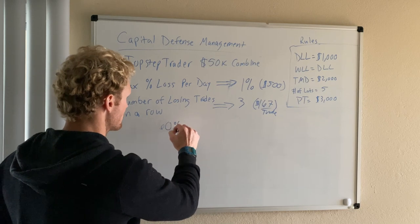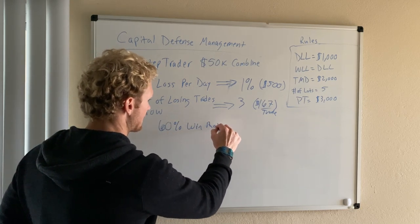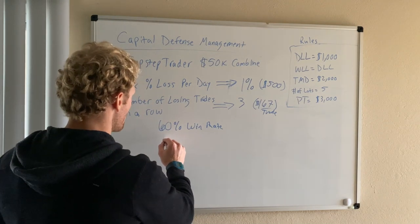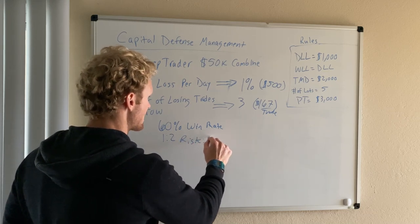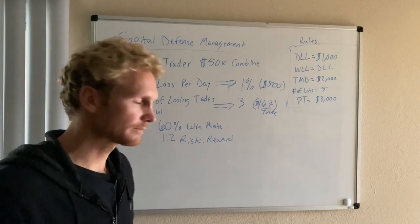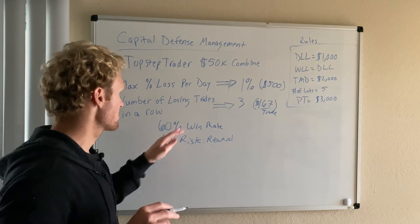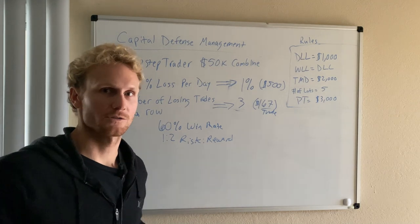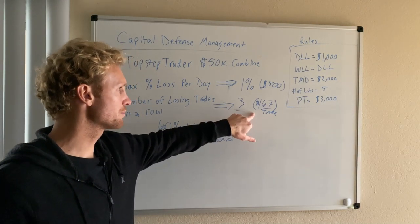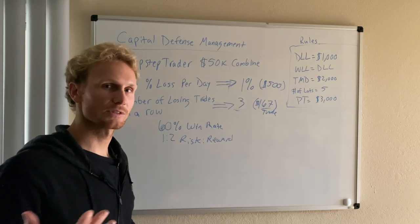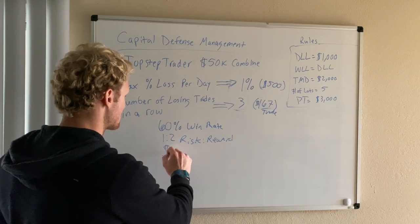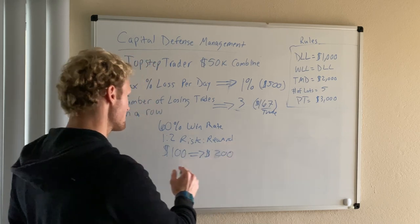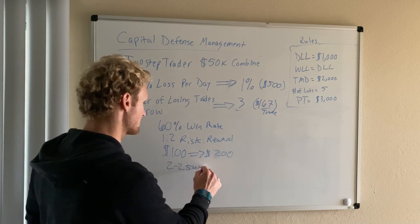Let's say our win rate is sixty percent and our target risk-reward on most trades on average is two R. For every hundred bucks we risk, we make two hundred, and we win sixty percent of the time. Assuming we take three trades per day and risk one hundred dollars on each trade to simplify things — we can go up to one sixty-seven which is fine — it will take about two and a half weeks to pass each step of the combine with trading a one-lot.